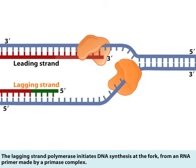The lagging strand polymerase initiates DNA synthesis at the fork from an RNA primer made by a primase complex.